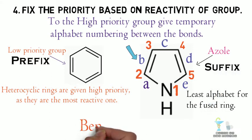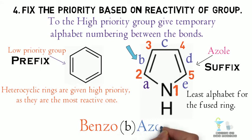In this, the low priority group is benzene, so first benzo is written, and as the fused atoms alphabet is B, B is written and finally